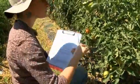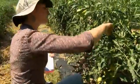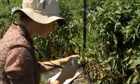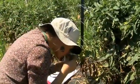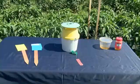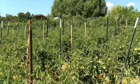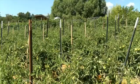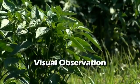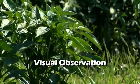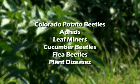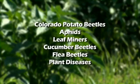Many problems you'll be able to detect with visual observation. For some it's going to be helpful to use a hand lens, a sweep net, or a trap. In other cases you might need to dig up those plants and look at the roots. Visual observation works well to monitor exposed feeding insects such as Colorado potato beetles, aphids, leaf miners, cucumber beetles, flea beetles, and plant diseases that affect the leaves and fruit.